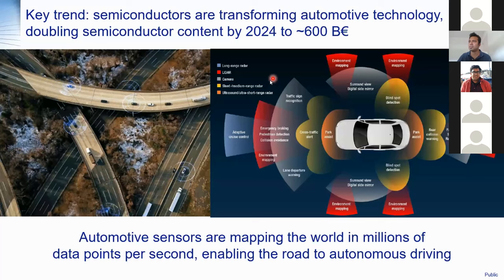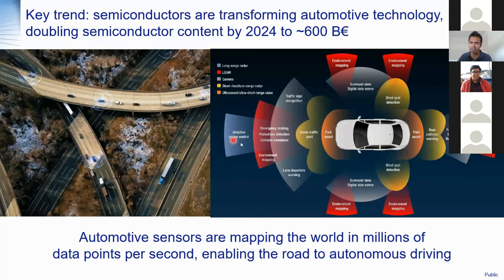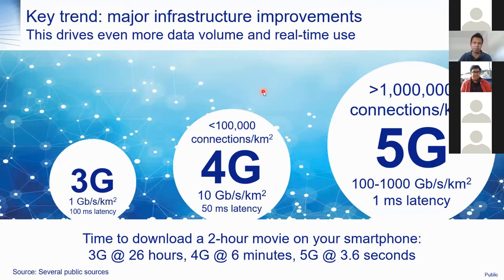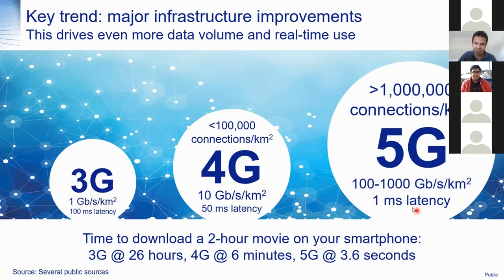One key trend is automotive technology. We need sensors everywhere — for parking assistance, emergency braking, and adaptive cruise control — where microchips must calculate and react quickly and reliably. Another key trend is connectivity. We're moving from 4G to 5G, supporting huge bandwidth. With 5G, downloading a two-hour movie on your smartphone takes only a few seconds, compared to hours with a 56 kbps modem. 5G provides huge bandwidth and very low latency.